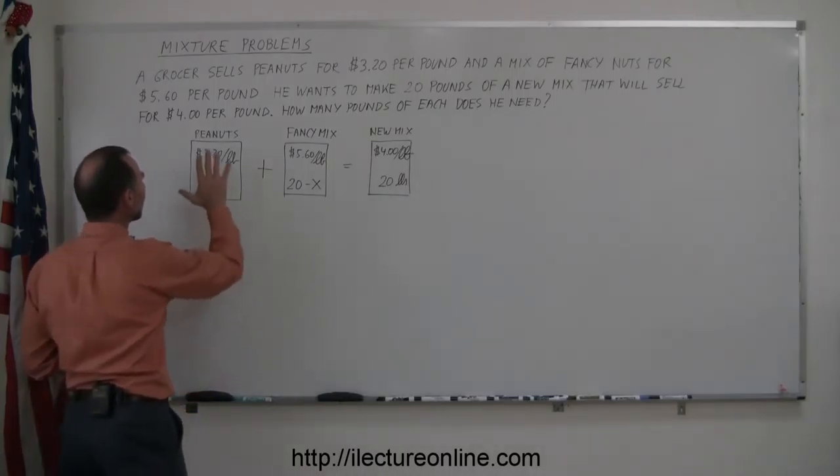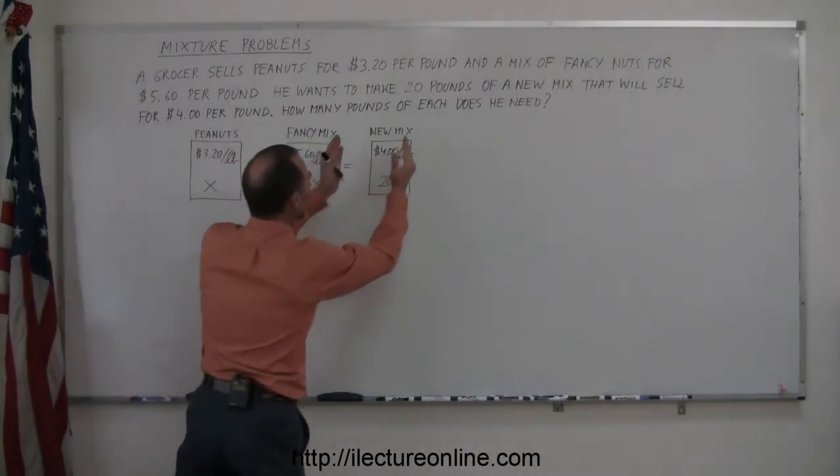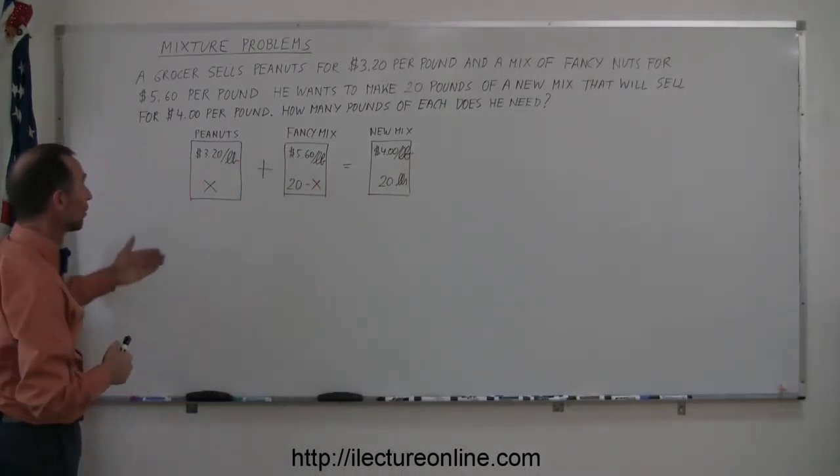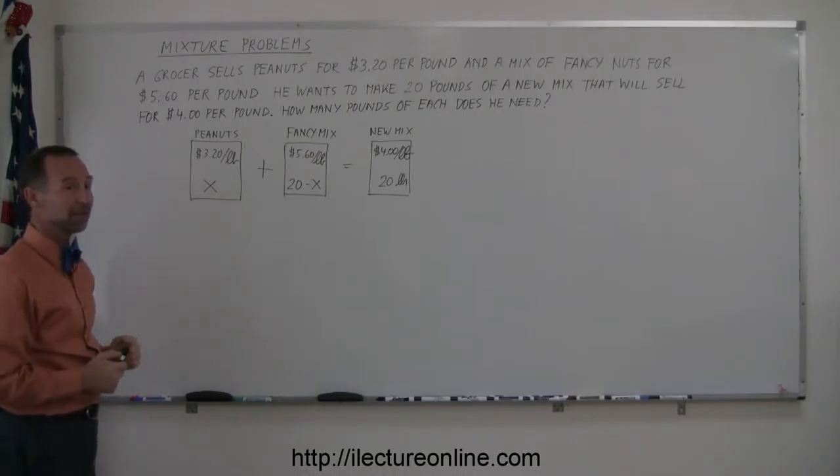So we can see that the value of this mix plus the value of this mix should add up to the total value of this mix. And to find the value of each mix, we simply have to multiply the price per pound times the number of pounds that we have.